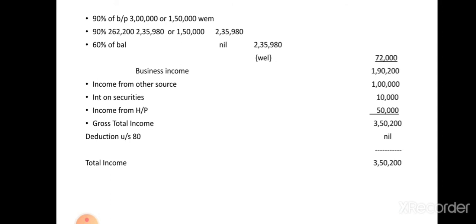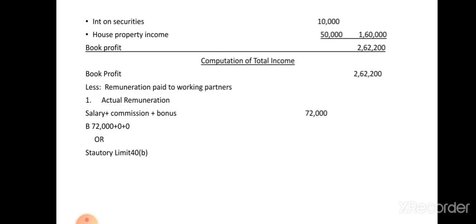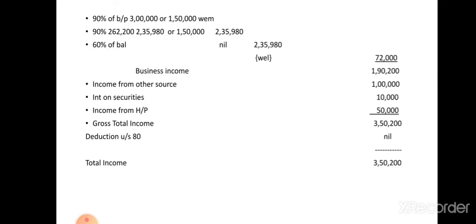Comparing actual remuneration of seventy-two thousand with the statutory limit of two lakh thirty-five thousand nine hundred eighty, you take whichever is less. Seventy-two thousand is the lesser amount, so seventy-two thousand goes to the outer column. Deducting seventy-two thousand from the book profit, the balance is one lakh ninety thousand two hundred, treated as business income.